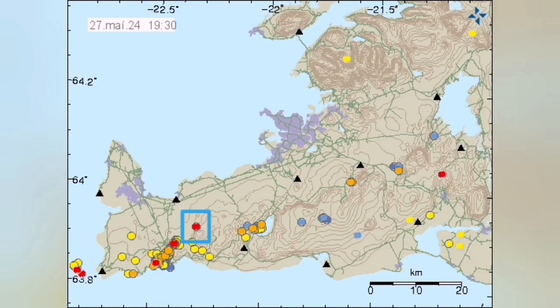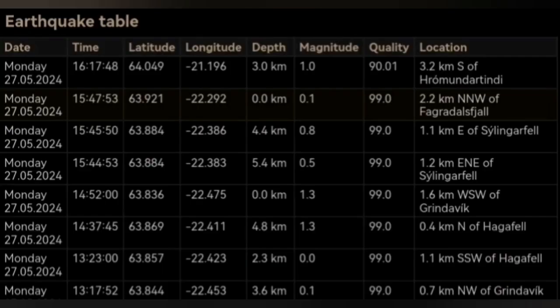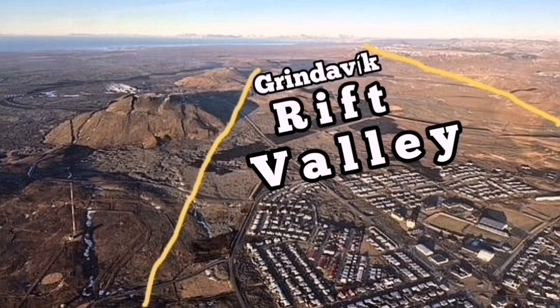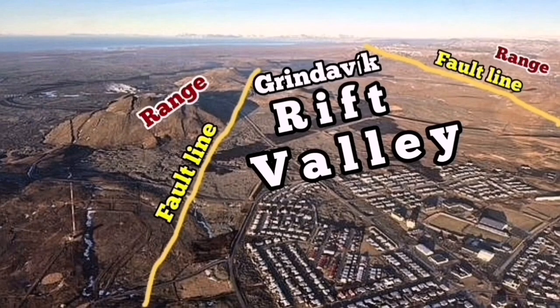That is exactly on the plate boundary. And when we look at the depth of it, this is at zero depth, 2.2 kilometers north of Fegerdesville. That's practically exactly on the plate boundary we see it. It was a small one. This is the Grindavik Rift Valley.